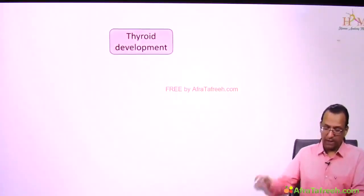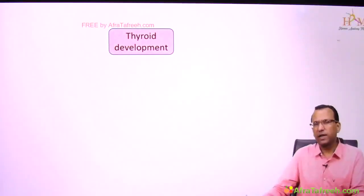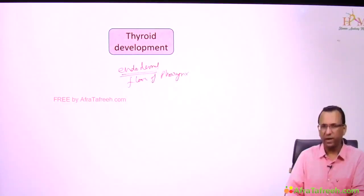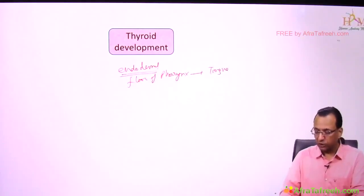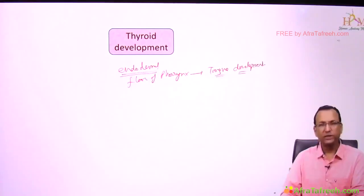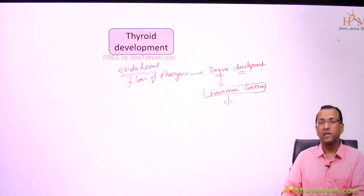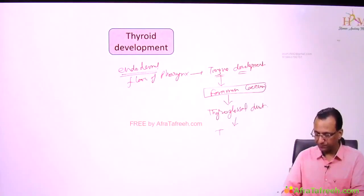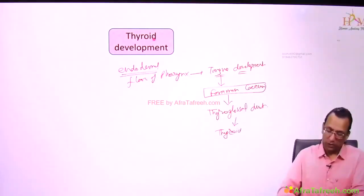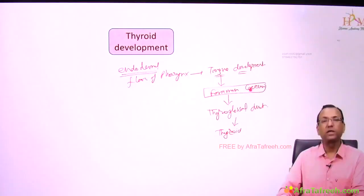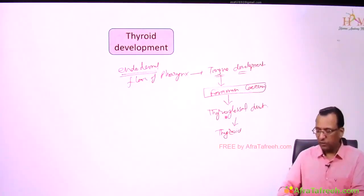Now discussing thyroid development. Thyroid is endodermal in origin, developing at the floor of the pharynx. The tongue is developing at the floor of the pharynx, and there is a foramen cecum on the tongue. Endoderm at the foramen cecum forms a thyroglossal duct, which forms the thyroid gland, migrating from the tongue to the anterior neck region.